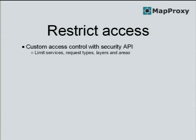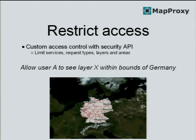Now the security API. MapProxy can restrict access to your source services using a security API. You can write your own code that connects to your own user database, and your code decides what the user is allowed to do. You can limit by service — like WMS or tile requests — request type like feature info, layers, and even geographic areas. For example, you can say user A is allowed to see layer X but only within the boundaries of Germany — everything else is clipped and made transparent. A satellite provider uses this to restrict access to paid customers, and it also works with tiled requests.